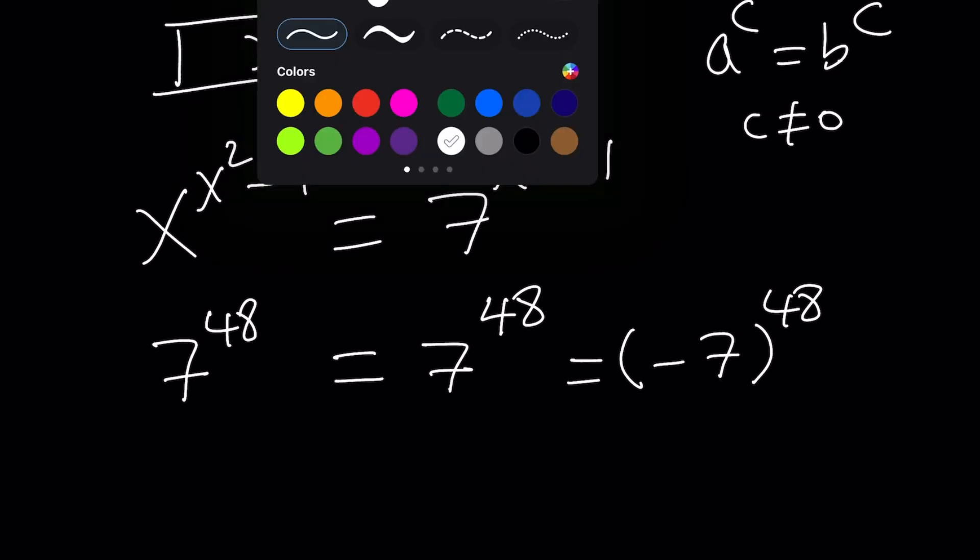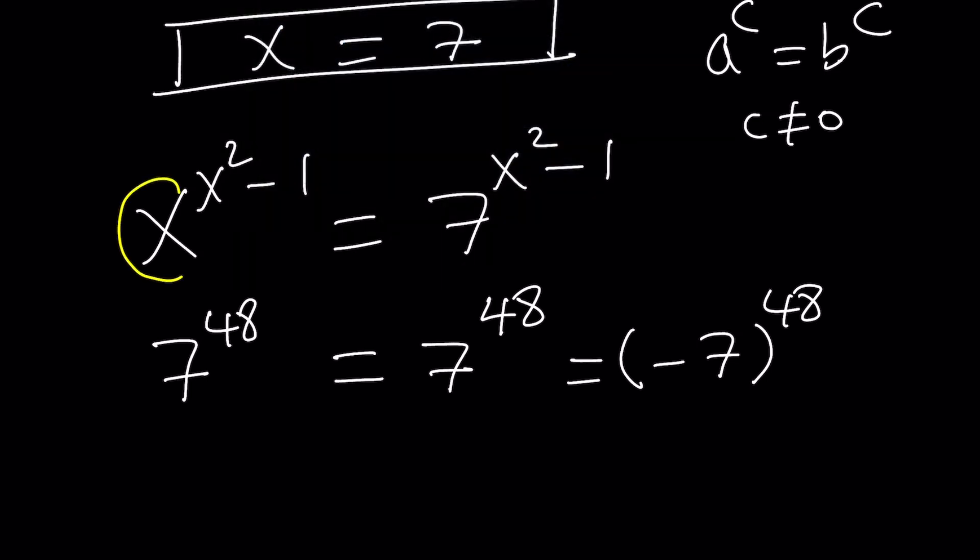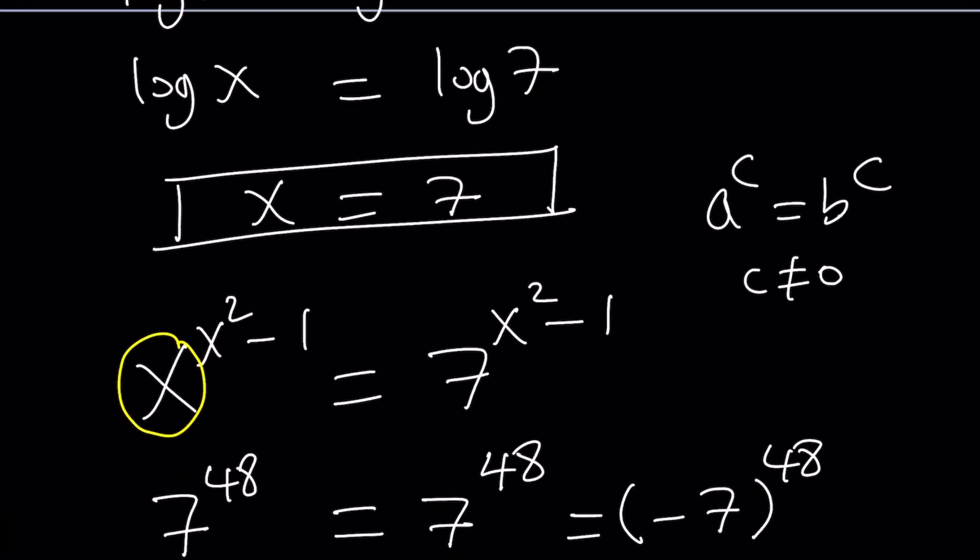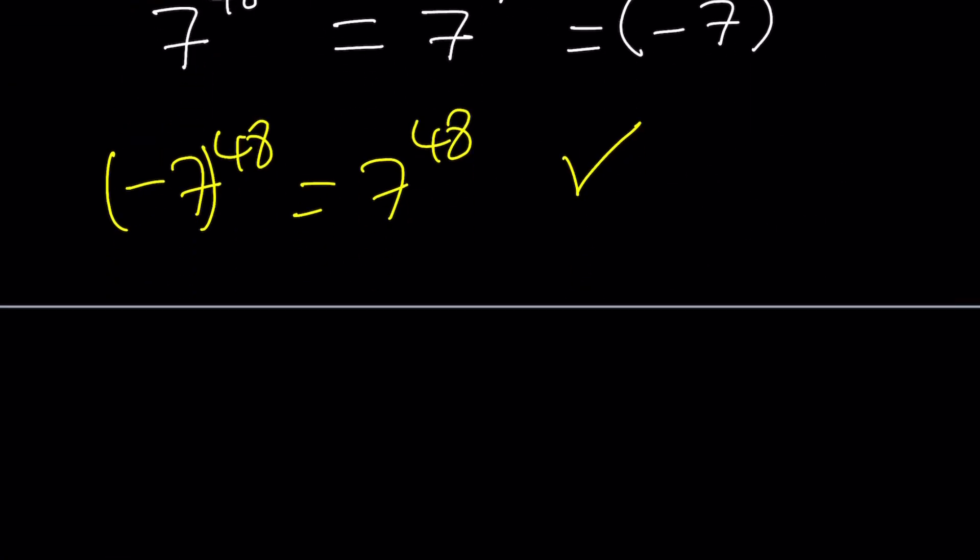Why? Because if you replace x with negative 7, you get negative 7 to the power 48, like this, equals 7 to the power 48, and this is true. Make sense? Great. So, we get ourselves another solution. x equals negative 7.